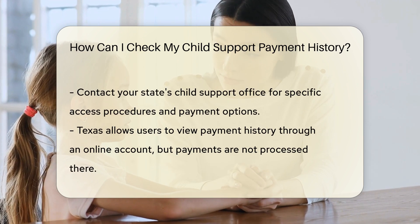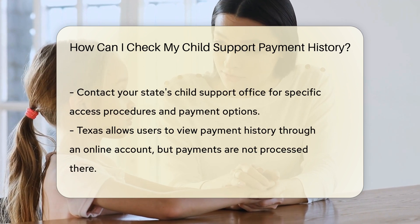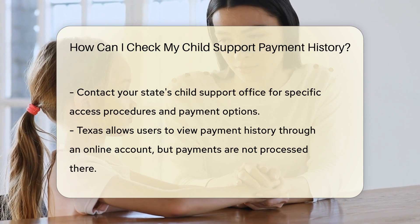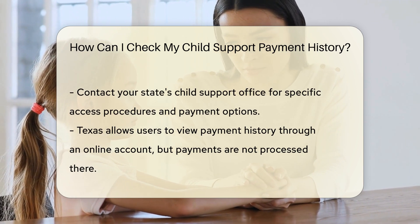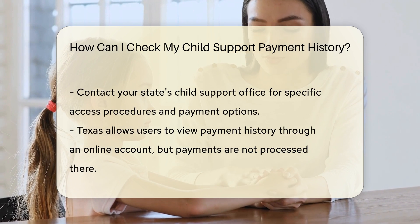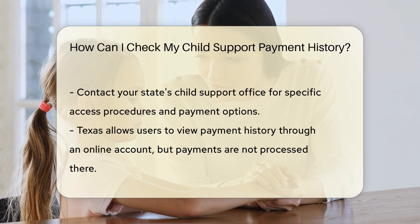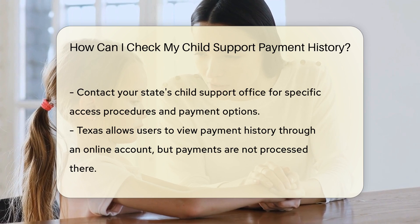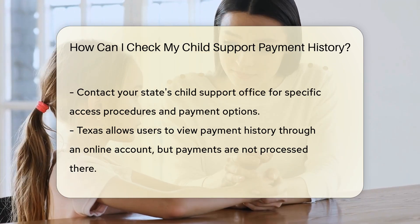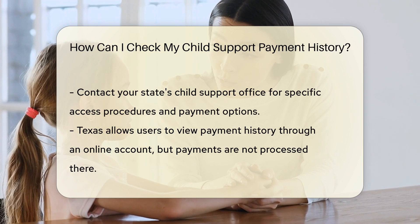General Process: Contact your state's child support office for specific information. They can provide details on how to access payment history, set up recurring payments, and use electronic payment options. Some state websites allow you to view payment information online, while the federal website does not provide case information.